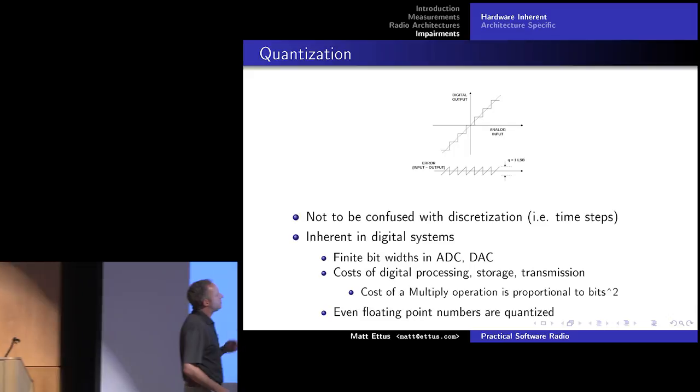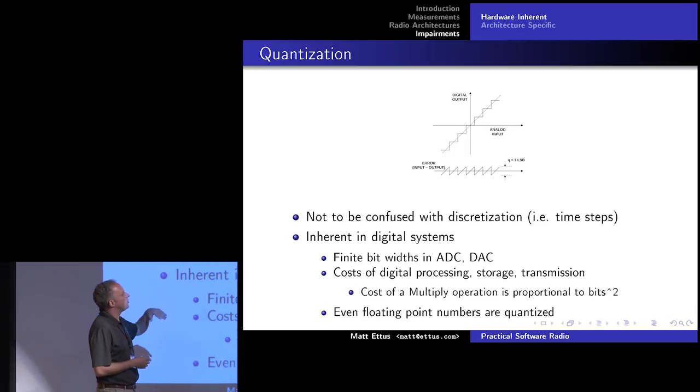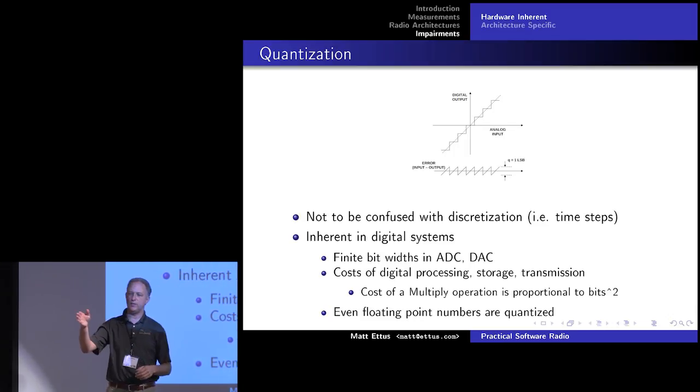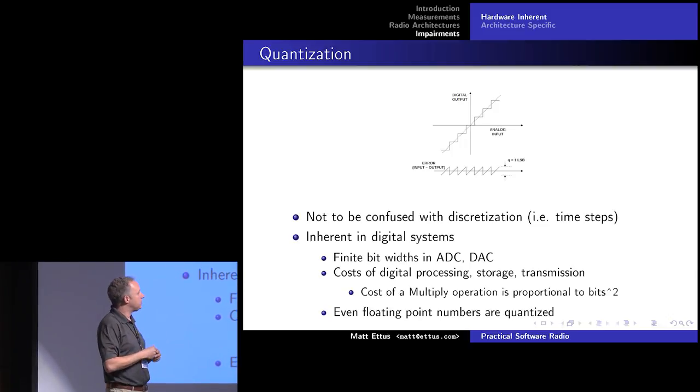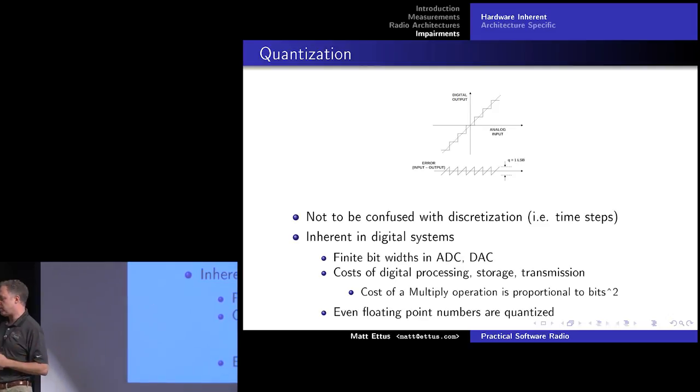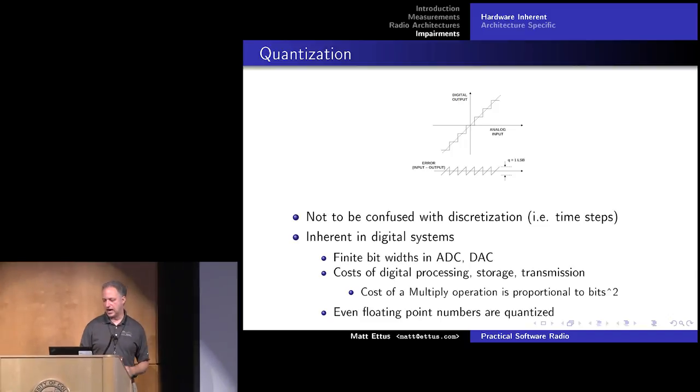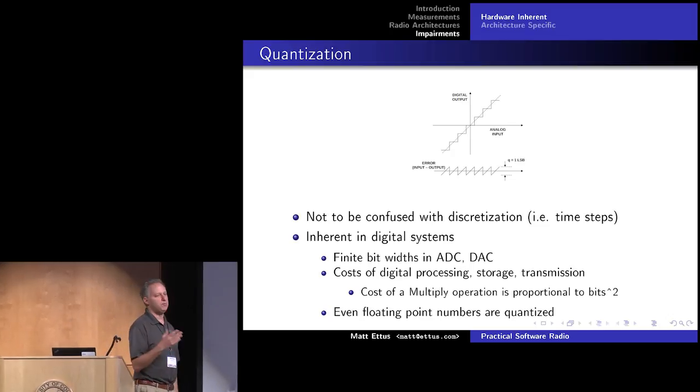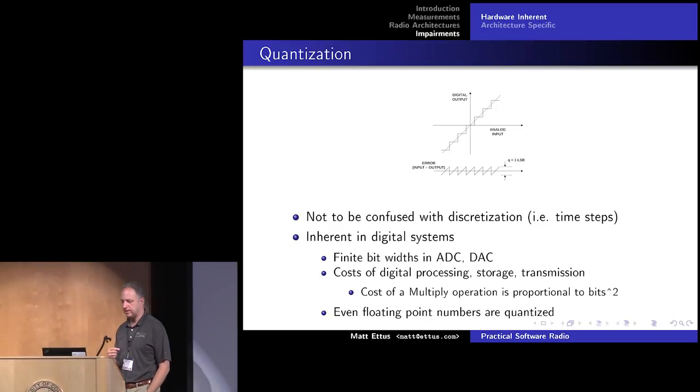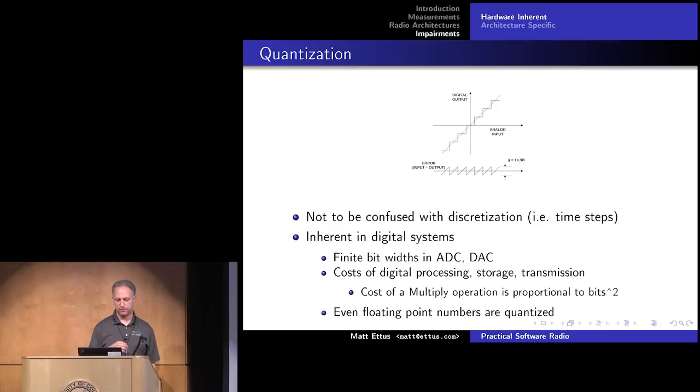So at the top is the basic graph, which I'm sure everybody's familiar with, that shows how quantization works. You have some analog input and then the output takes stepped values. Now, in reality, it's a little, sometimes there's miscodes and things and there's noise on this and non-linearity, but this is the basic concept. And so this is quantization in the amplitude, as opposed to discretization, which is in the time domain. Both happen in an A to D converter, but here I'm mostly talking about the amplitude steps and not the time steps.